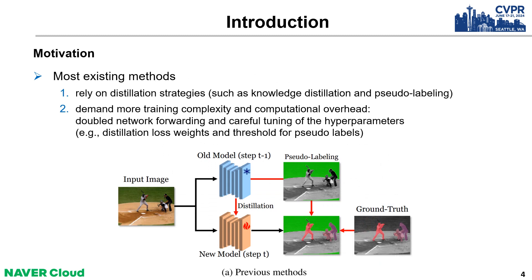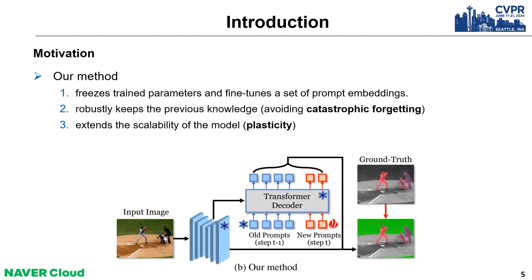Let me introduce our motivation. Most existing continual segmentation methods rely on distillation strategies, such as knowledge distillation and pseudo-labeling, which demand more training complexity and computational overhead. Motivated by the potential of visual prompt tuning, we freeze trained parameters and fine-tune a set of prompt embeddings. Our method robustly keeps the previous knowledge while extending the scalability of the model.